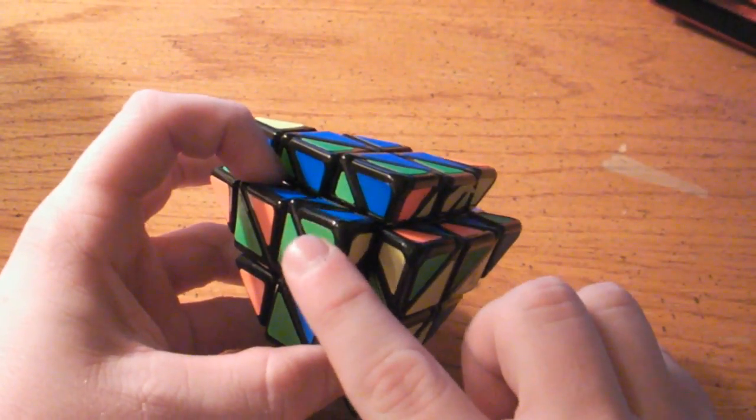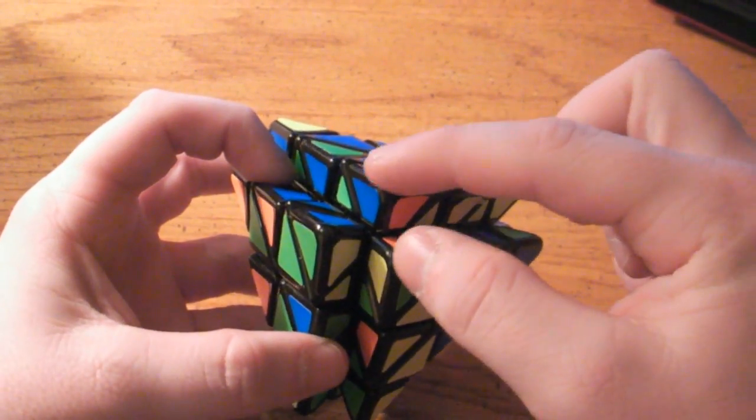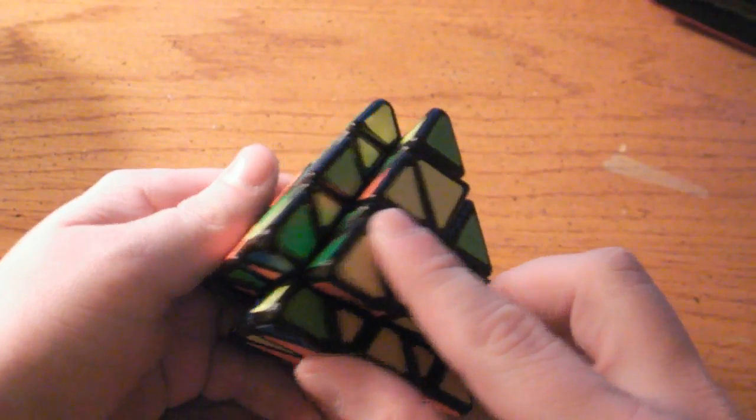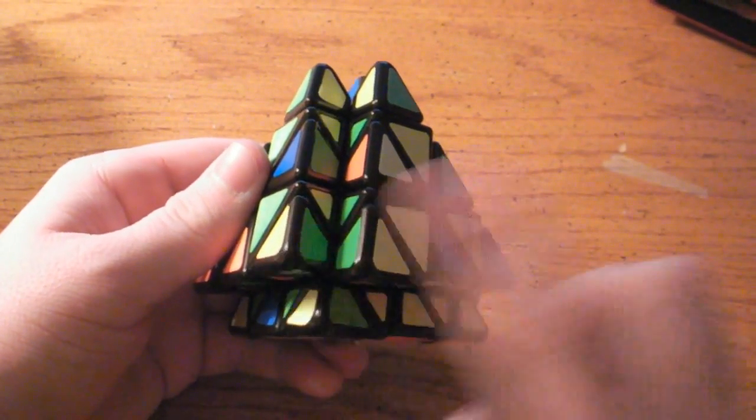So I already have one of them on this correct side, and that's nice, which means all I have to do is put the other two here. So what you can do is the three colors, again, are green, yellow, blue. So this is one of them right here.